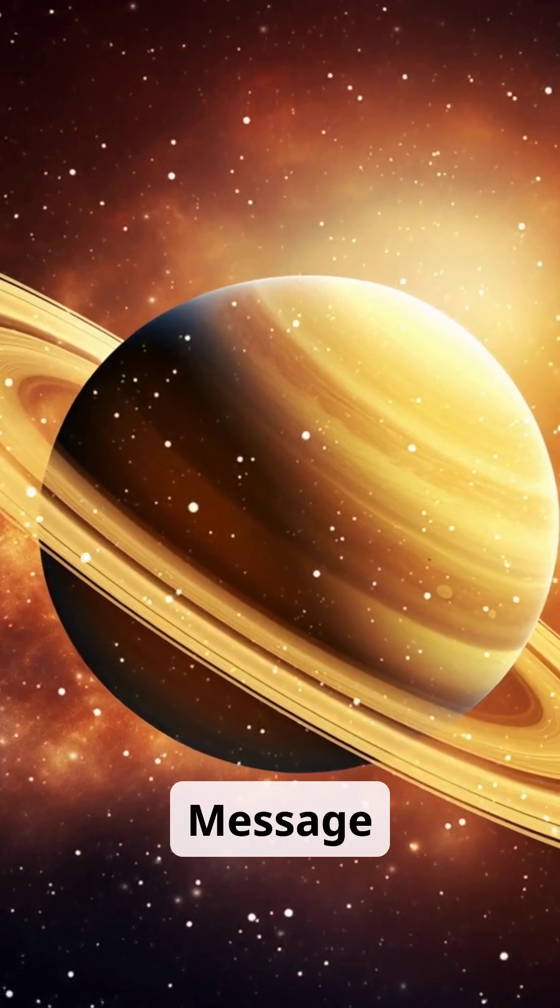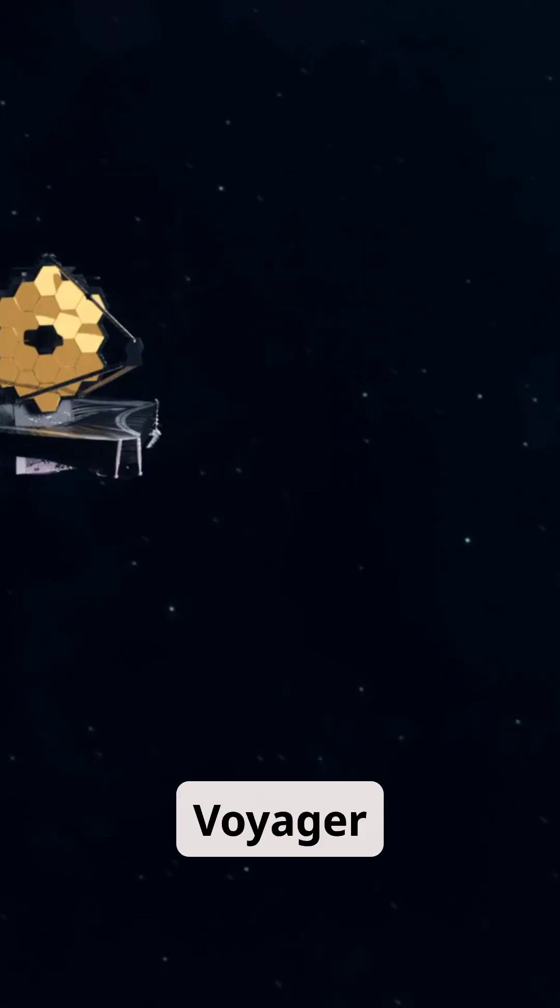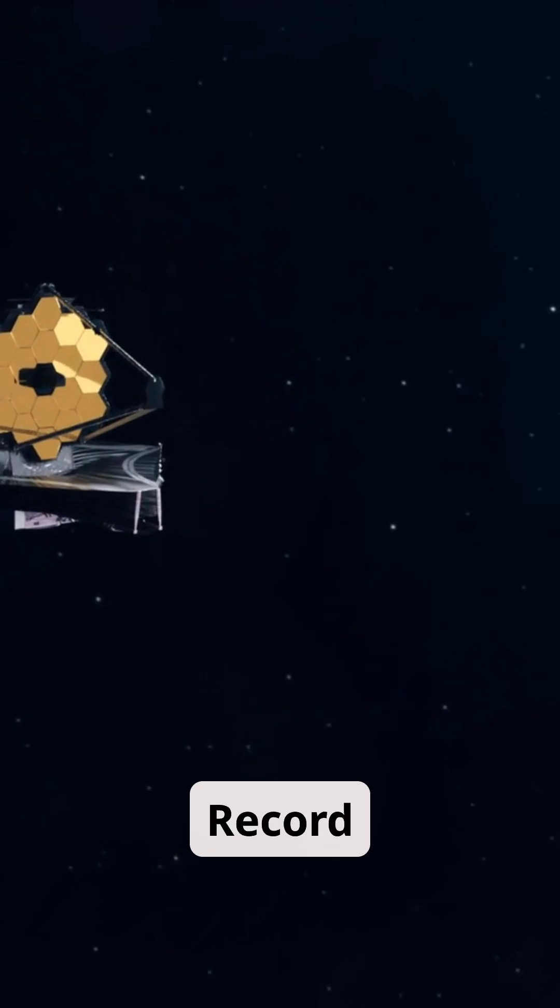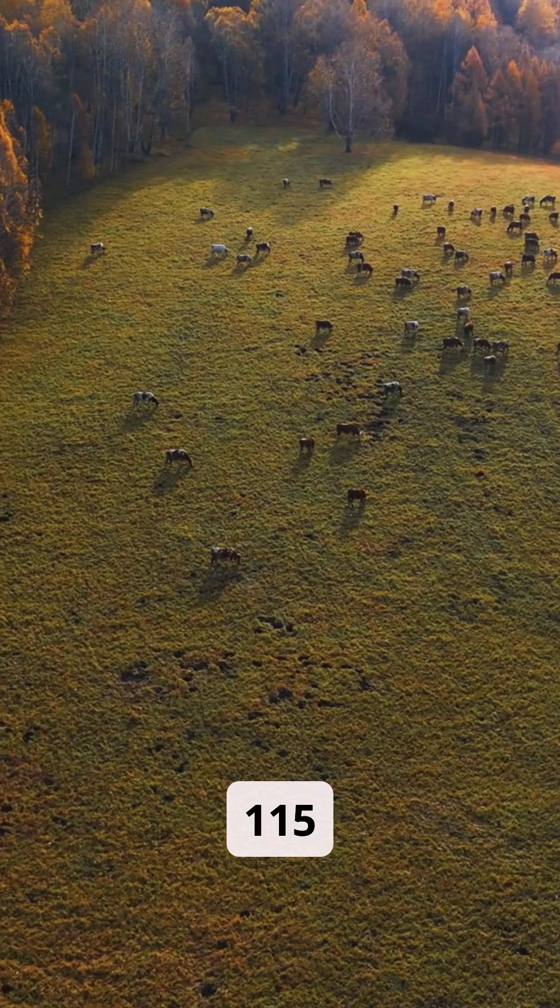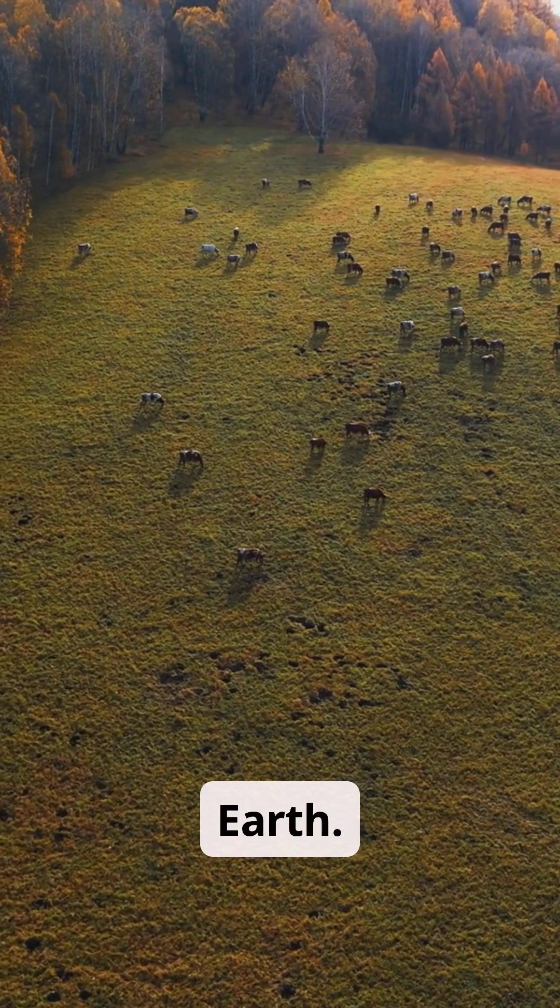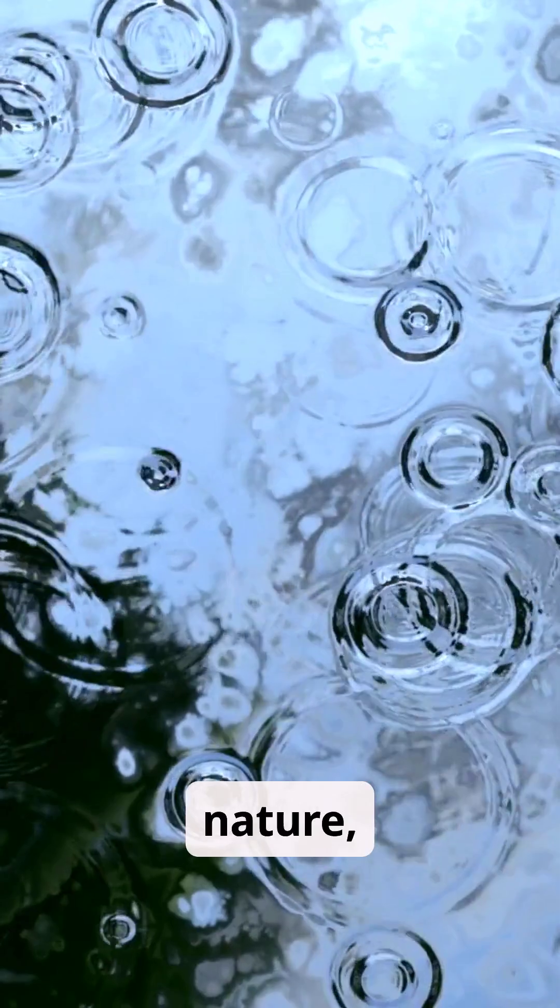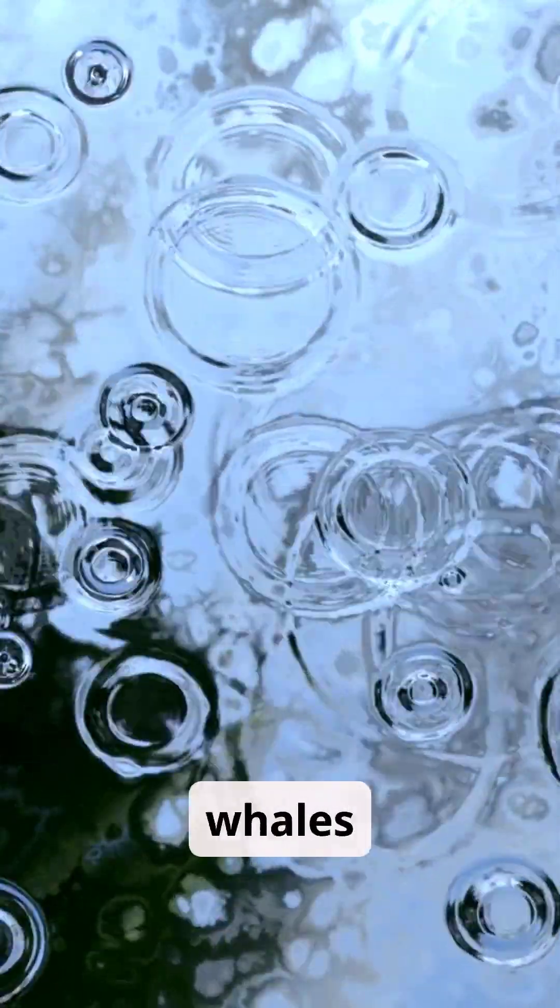The Golden Record, a message for aliens. Voyager 1 carries a special golden record that has 115 pictures of people, animals, and Earth. Sounds of nature, like rain, wind, and whales singing.